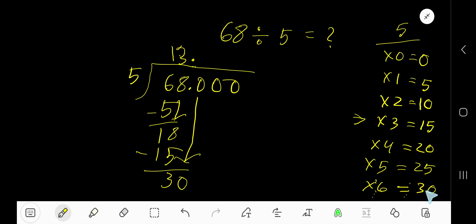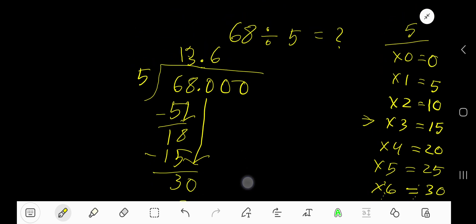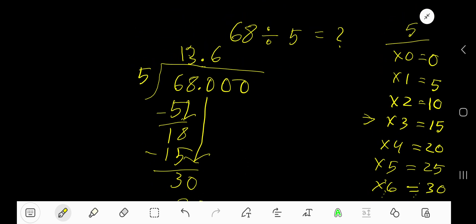5 goes into 30 how many times? 6 times. Write 6. 6 times 5 is 30. Subtract 0. As our remainder is 0, we are done. So 13.6 is our answer.